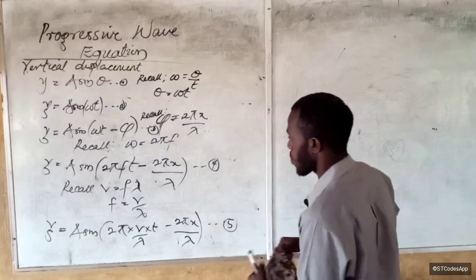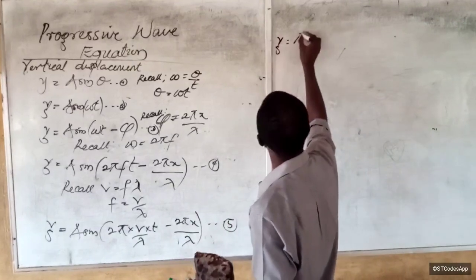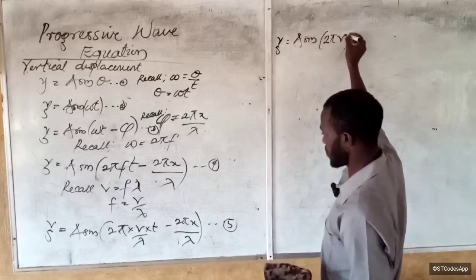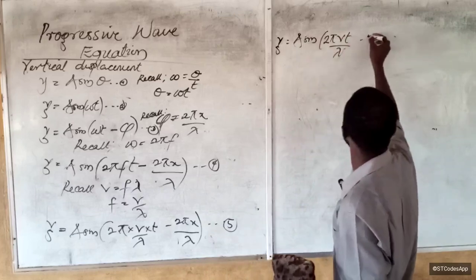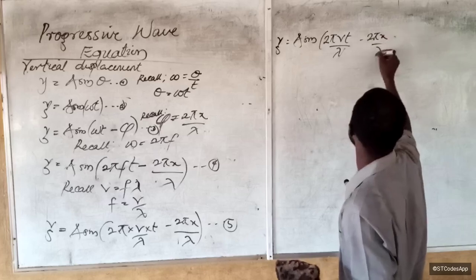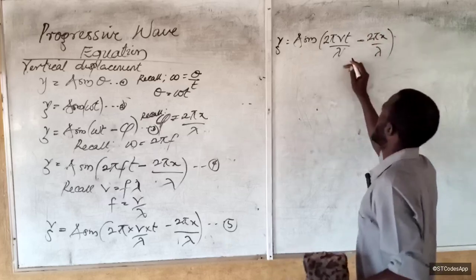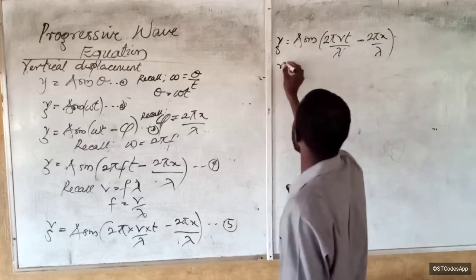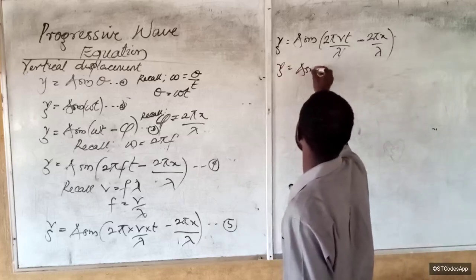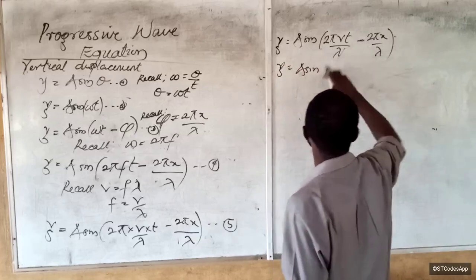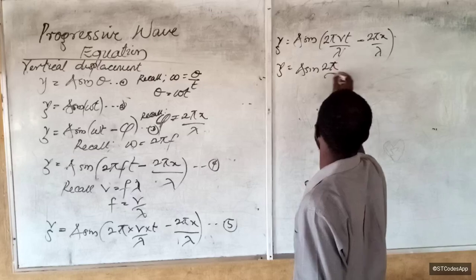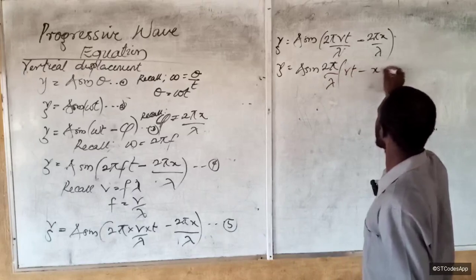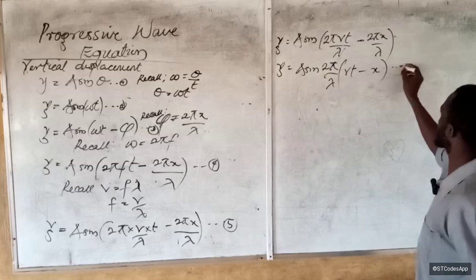Expanding equation five: y equals A sine of (2πvt over lambda minus 2πx over lambda). Notice that 2π over lambda is a common factor, so factoring it out gives y equals A sine of (2π over lambda) times (vt minus x) — this is equation six.